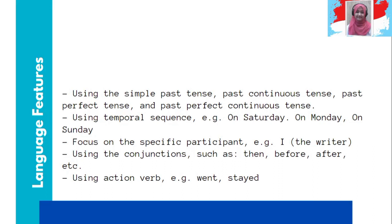So please, in your analysis, share whether there is a temporal sequence, sequence conjunctions, or past time indicators. Focus on specific participant — tadi who-nya siapa? Probably the writer, or the writer talks about somebody else — a specific participant. Using conjunctions such as then, before, after; and using action verbs because we are telling about activities happening in the past — the action verbs in past form.